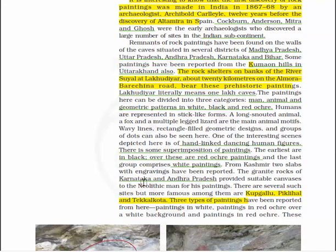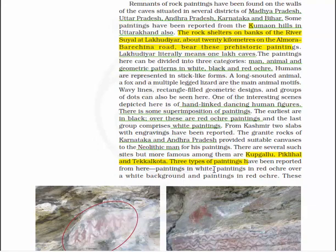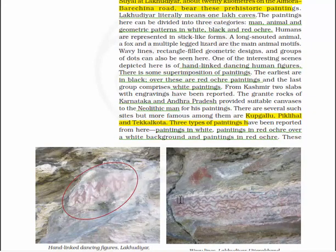There are several such sites in Karnataka and Andhra Pradesh, but the most famous among them are Kupgallu, Piklihal and Tekal Kota. Three types of paintings have been reported from here: painting in white, painting in red ochre over a white background, and painting in red ochre.